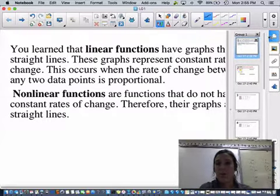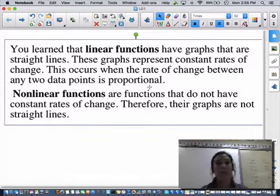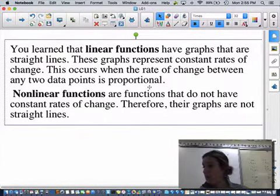Looking at the notes of what I have here, we have learned that linear functions have graphs that are straight lines. These graphs represent constant rates of change. This occurs when the rate of change between any two data points is proportional.